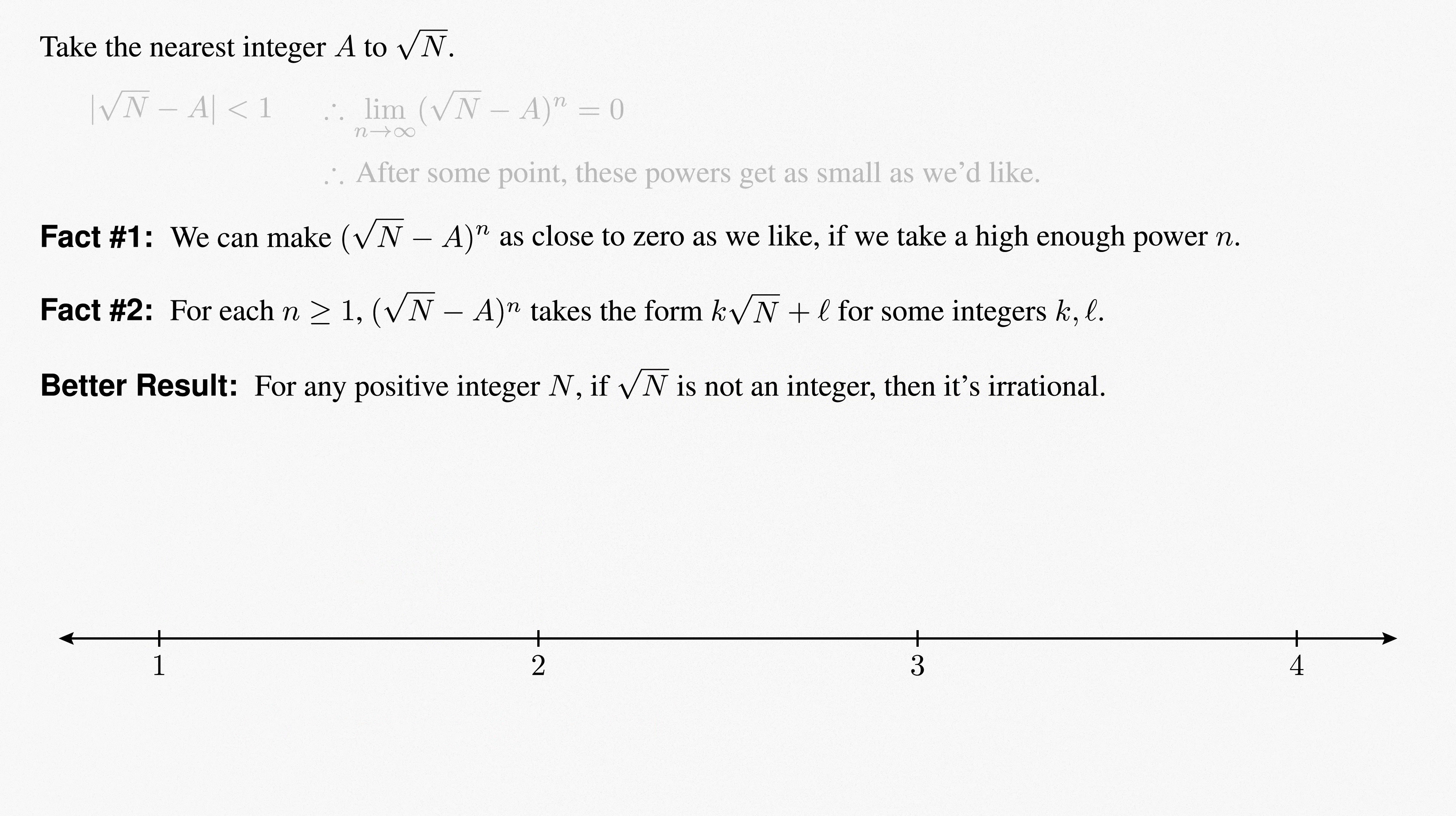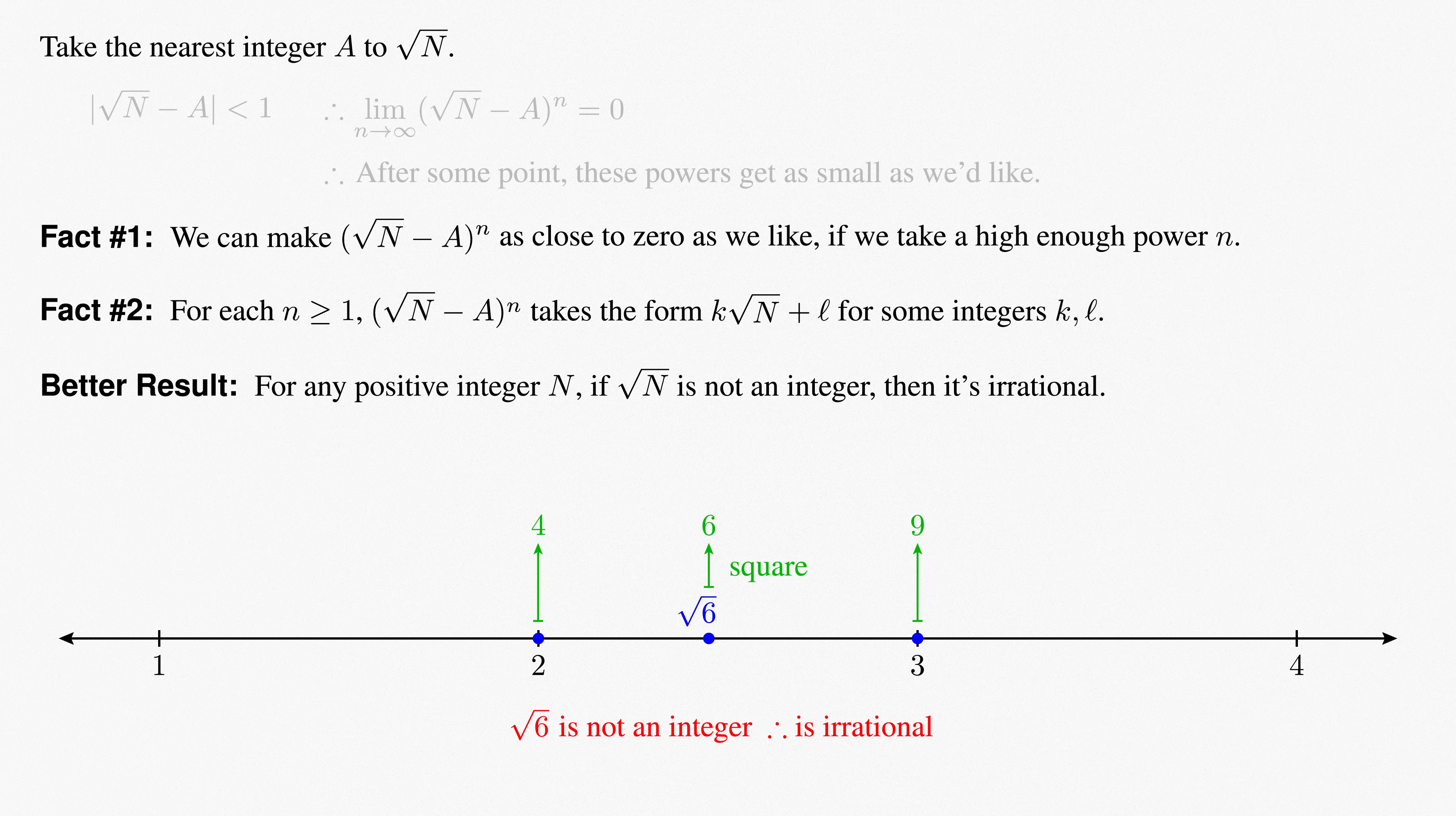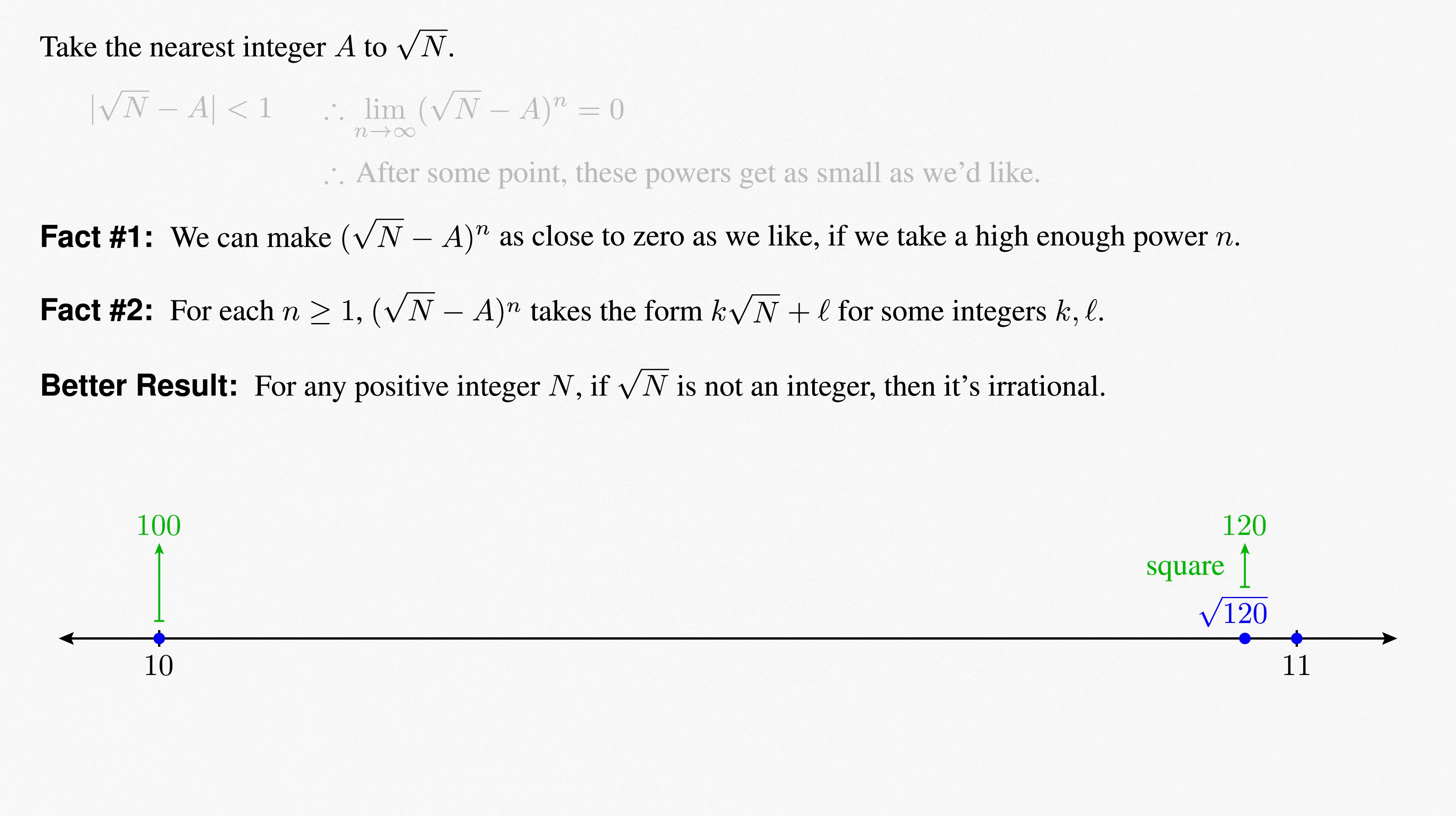Even a composite number like 6 requires no extra work. Root 6 lies strictly between 2 and 3, because 2 squared is 4, which is less than 6, and 3 squared is 9, which is greater than 6. And thus it's irrational for the same reason, regardless of the fact it has two prime factors. The number of prime factors, and even square factors, doesn't change the argument. Root 120 lies strictly between 10 and 11, because 10 squared is 100, which is less than 120, and 11 squared is 121, which is greater than 120. And thus root 120 must be irrational.